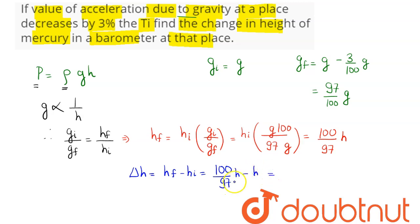This comes as 3/97 h. That is, we can see the change in height is 3/97 of the original height in the barometer.